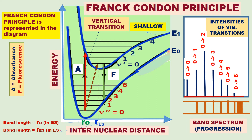Here, E0 is the ground electronic state and E1 is the first excited electronic state. In each electronic state, there are vibrational levels. For each electronic state, there are vibrational levels as well as rotational levels, because the electronic energy is very much greater.